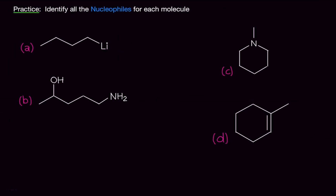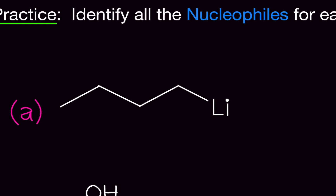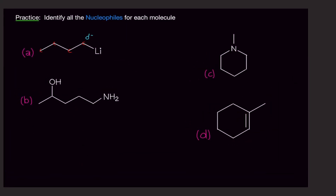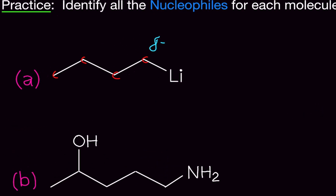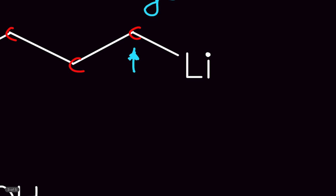Let's do some practice problems — identify all the nucleophiles for each molecule. For molecule A, we have no lone pairs visible and no double bonds, so we rely on inductive effects. The carbon bonded to lithium is pulling electrons from lithium through inductive effects, because lithium is much less electronegative than carbon. This gives that carbon a partial negative charge, making it the nucleophile.